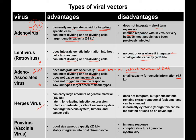Herpes viruses and different types of pox viruses have big advantages in that they can deliver a lot of genetic material — large carrying capacity. They have long-lasting expression; pox viruses can integrate, and herpes stays as an episome, which is circular DNA. They can target different tissues, but there are some cytotoxic immune response issues with these types of viruses.